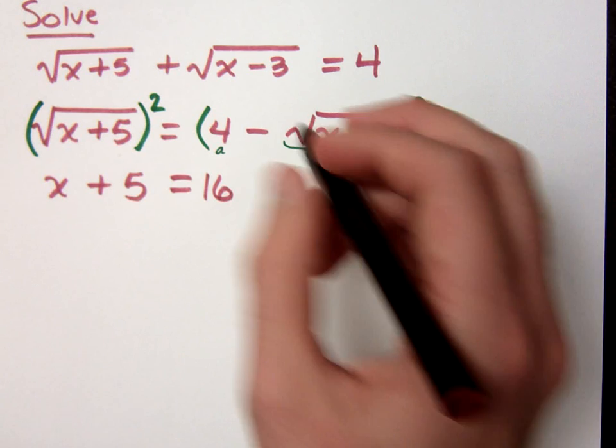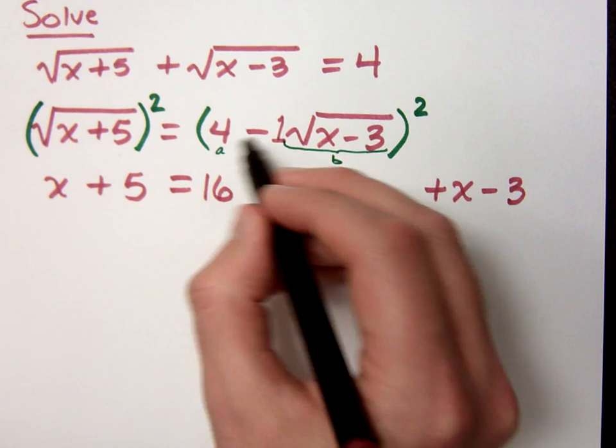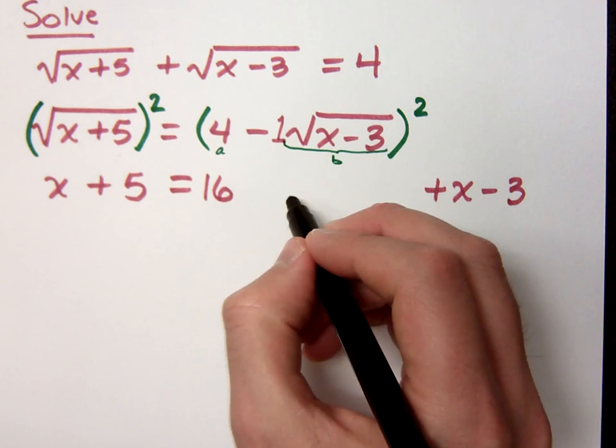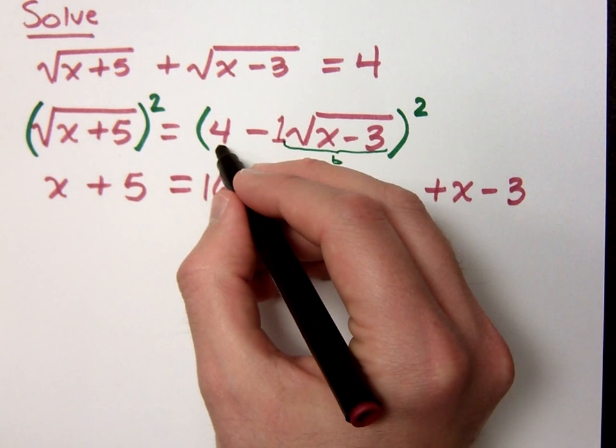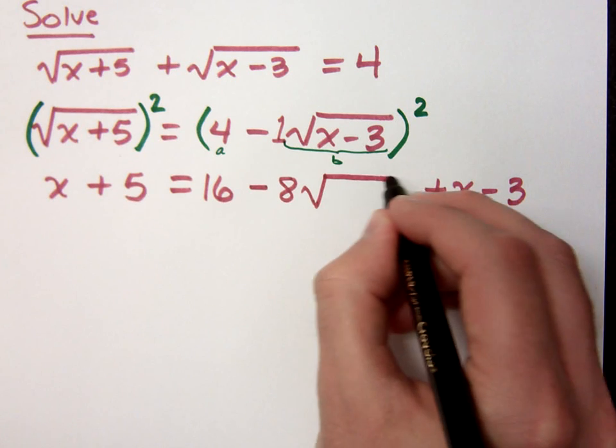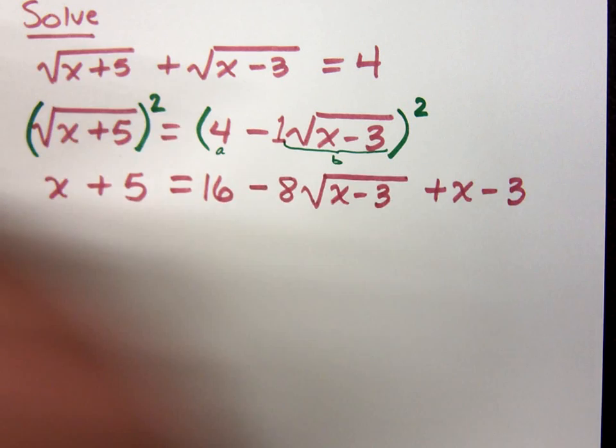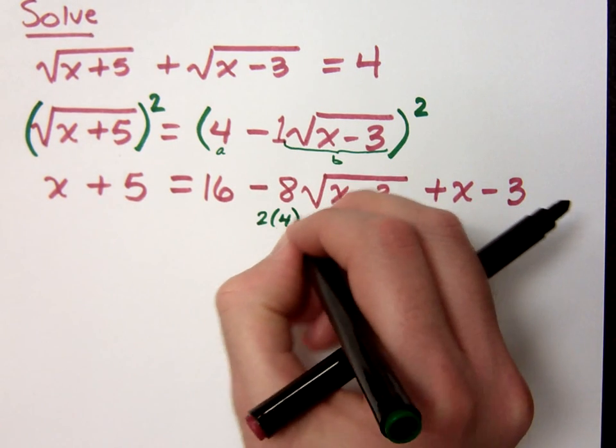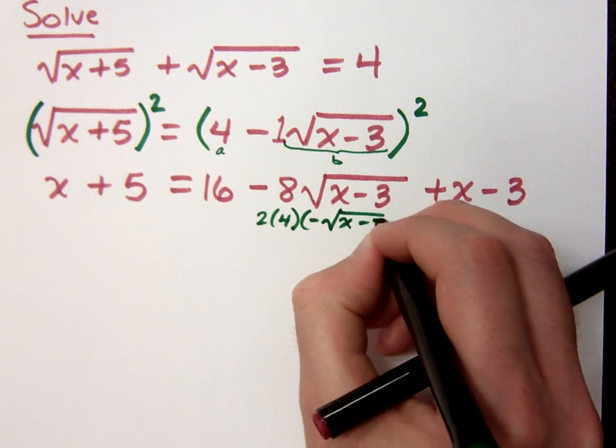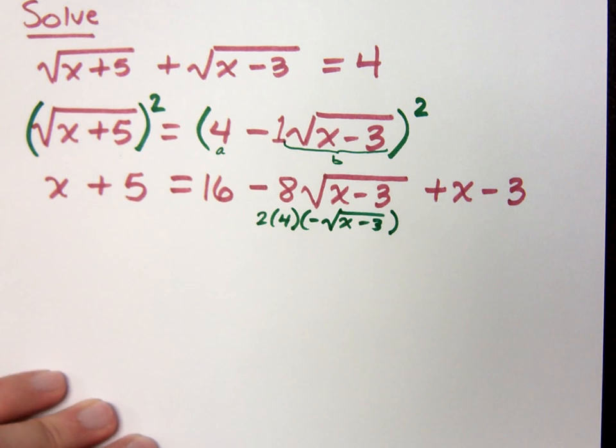But then you get 2ab. Remember that this is a 1 right here. So if I do 2 times 4 times negative 1 square root of x minus 3, that gives me the middle term. So 2 times 4 is 8 times negative 1, so that's negative 8 times the square root of x minus 3. So just so you guys see, that's 2 times 4 times negative square root of x minus 3. So I multiply all this together and that's where I get the negative 8. It's from that formula for squaring a binomial.